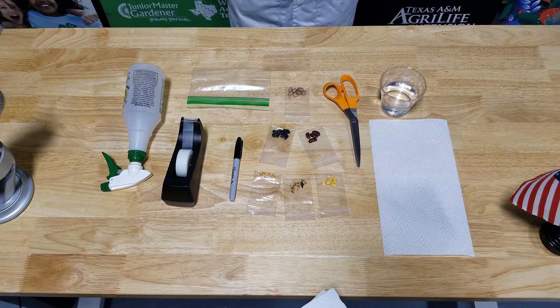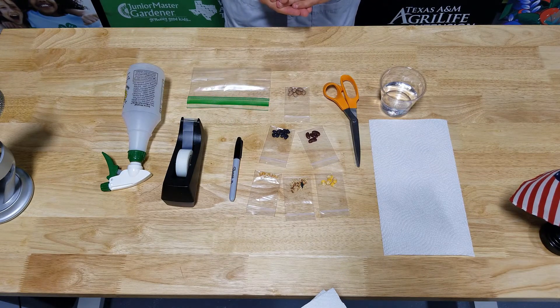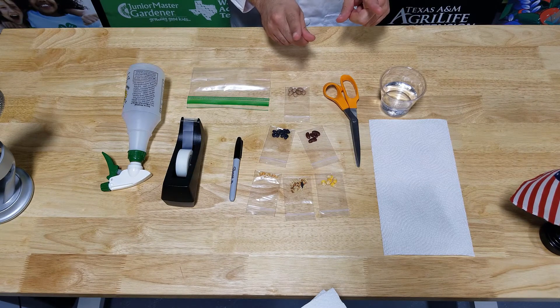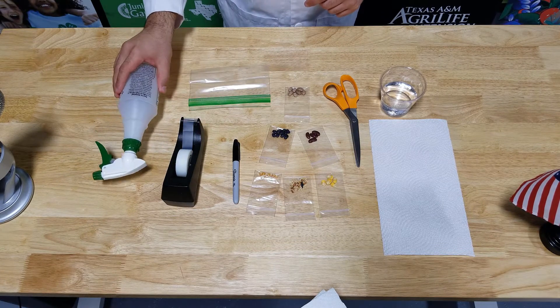Things that you'll need for this experiment are seeds that you found from your pantry or various places around your house, a paper towel, water, scissors with your parents' permission, a marker, a plastic baggie, tape, and an optional water bottle.